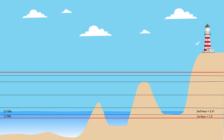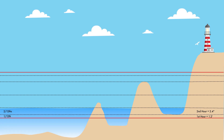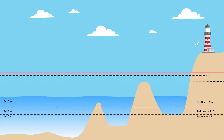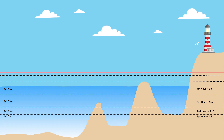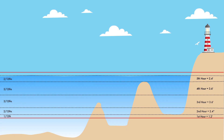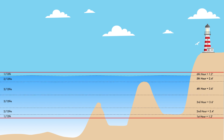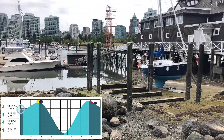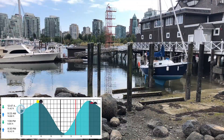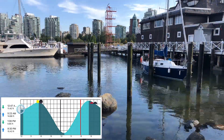2 twelfths in the second hour — an additional 2.4 feet, then 3 twelfths in the third hour — an additional 3.6 feet, then 3 twelfths in the fourth hour, back to 2 twelfths in the fifth hour, and finally 1 twelfth in the last or sixth hour. As you can clearly see in this graph taken from a tide app, the curve is steepest in the middle, meaning the greatest rise and fall happens in the middle 2 to 4 hours of the tidal duration.